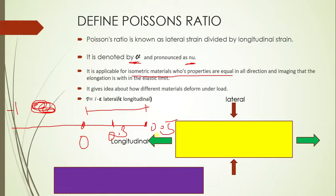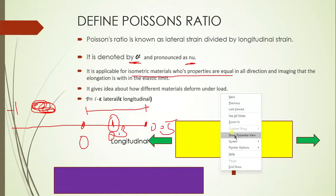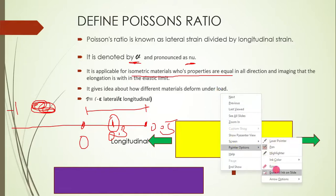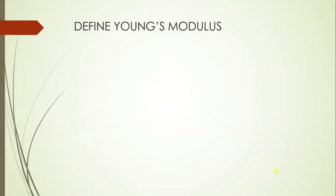To summarize: the theoretical range of Poisson's ratio is minus one to 0.5. Most materials fall between 0 and 0.5, and most metals have a Poisson's ratio near 0.3. Now let's move to Young's modulus.